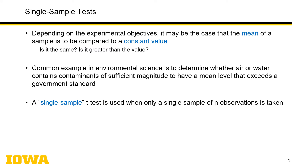Let's move on to single sample testing now. Single sample means just what it is — you're going to take a single sample of, say, 20 observations, and you're going to compare your mean level to some value of interest. Depending on the experimental objectives, the mean of the sample may be compared to some constant value: is it the same, or is it greater than the value? In the world of environmental science, it's common to determine whether air or water contains contaminants of sufficient magnitude to have a mean level that exceeds government standards. A single sample t-test is used when only a single sample of n observations is taken.